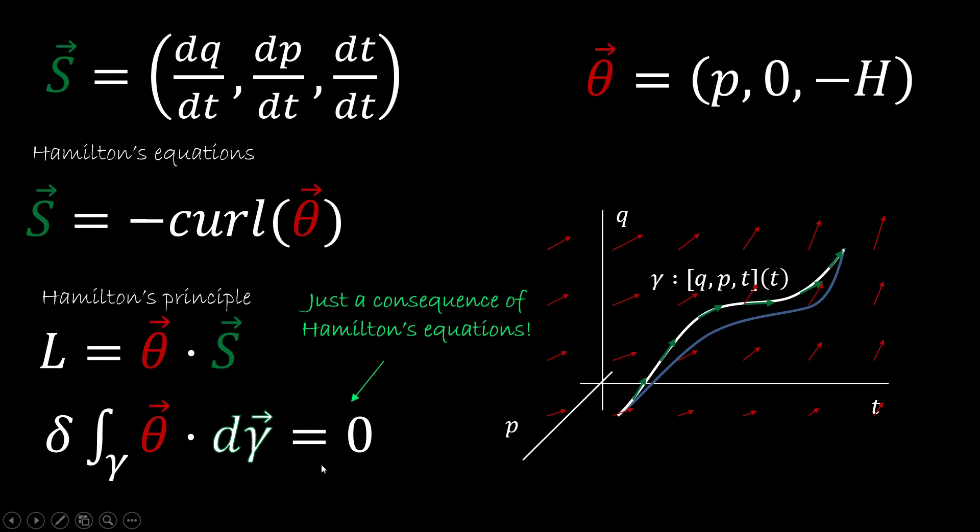So Hamilton's principle is just a consequence of Hamilton's equation. It's not adding anything new. Once you were saying that S admits a vector potential and that our vector potential is theta, we have already said that the line integral of the vector potential is going to be stationary along the trajectory.